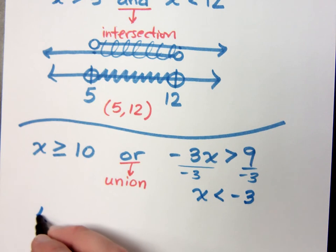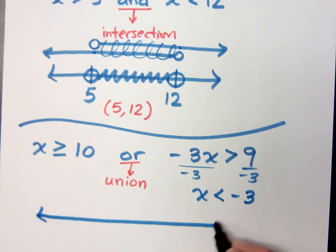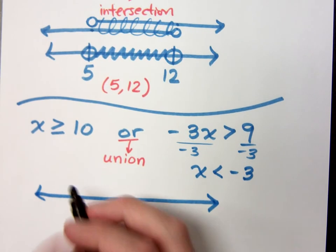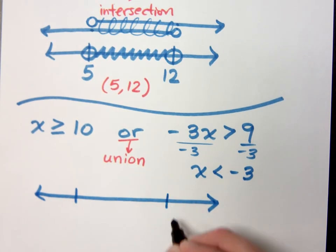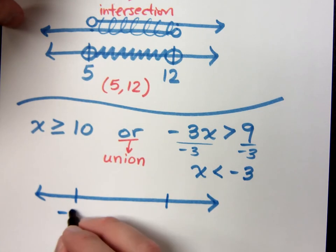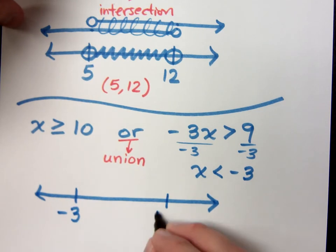So, when I see the word union, union means put everything together. So, I've got two numbers that I care about: 10 and negative 3. Keep in mind, the order is important. So, negative 3 is on the left, and 10 is on the right.